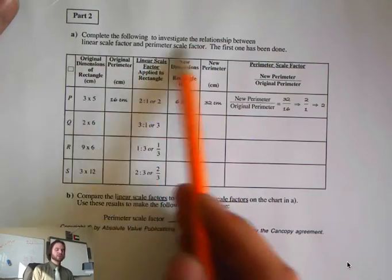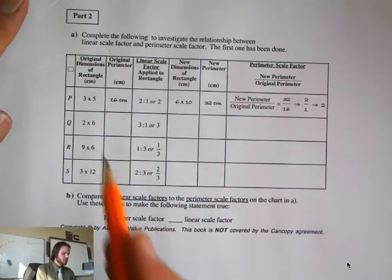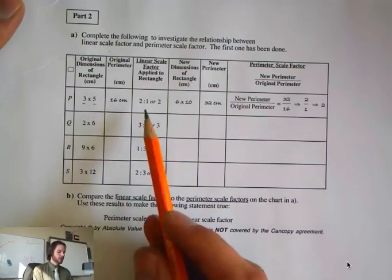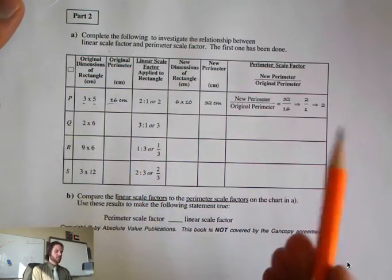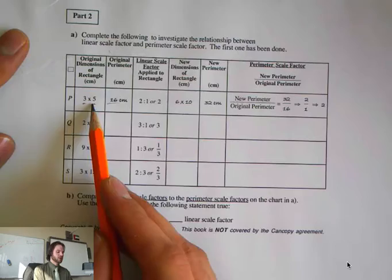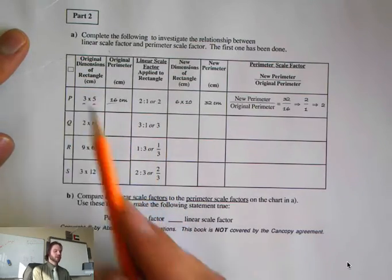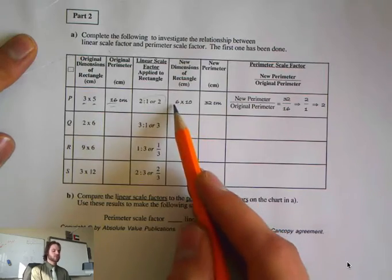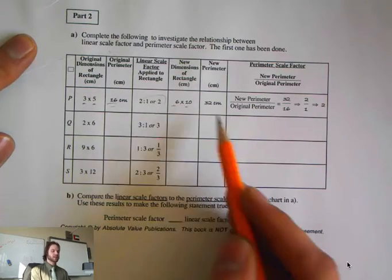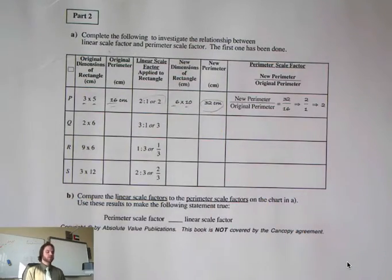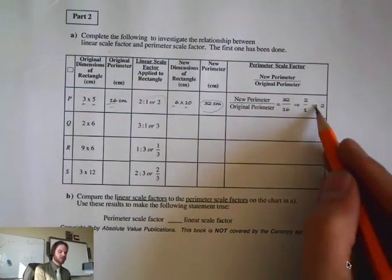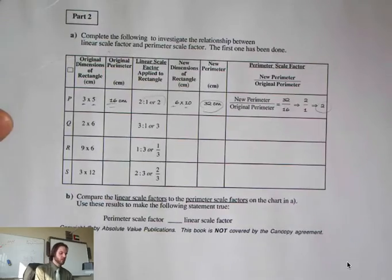So let's take a look at this here. It says complete the following table. We start off, we have a 3 by 5 rectangle, and we found the perimeter to be 16, because 3 times 2 plus 5 times 2, because the perimeter is adding all sides, will give us 16. And we have a ratio of 2, so the sides change to 6 by 10, which gives us a new perimeter of 32.